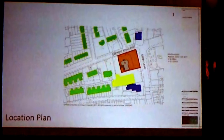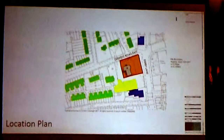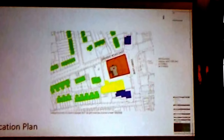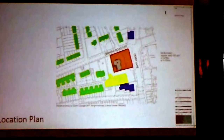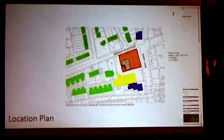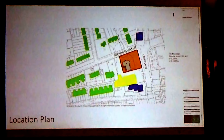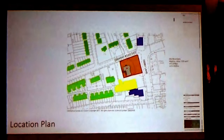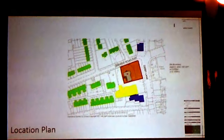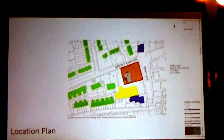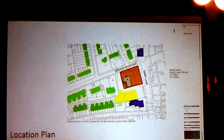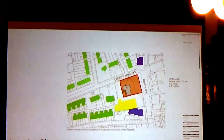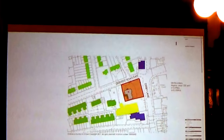This is the existing site plan. The site is located in Old Swan, just off Queen's Drive towards 1862. It's predominantly a residential area with residents, a church, and a social club, which is a retail company. The green areas are residential, the yellow is a social club, and the purple are retail space units on the plan.